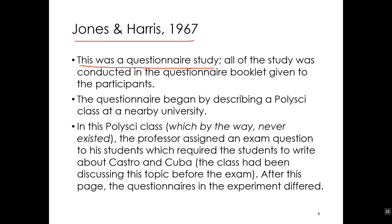None of those people in the story exist. Basically, all we have is a participant — a psychology student in the research pool — sitting down, reading a booklet and reading a story, and then responding by circling numbers. The questionnaire began by describing a poli-sci class at a nearby university. They actually described the student they're going to be talking about. This poli-sci class never existed — they just made it up, but it sounded very reasonable.